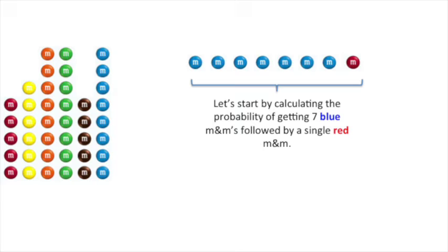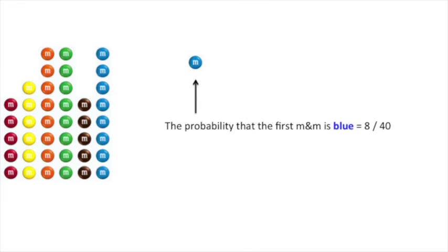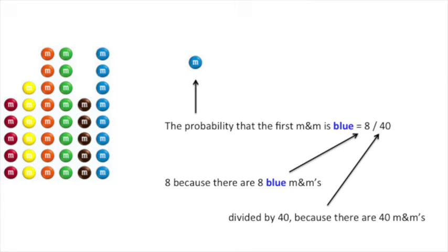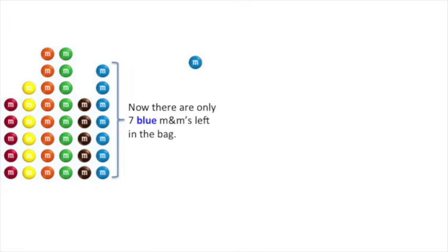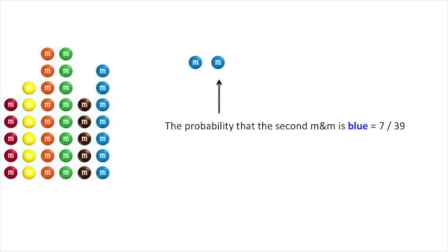Let's start by calculating the probability of getting seven blue M&Ms followed by a single red M&M. The probability that the first M&M is blue equals 8 divided by 40. 8 because there are 8 blue M&Ms divided by 40 because there are 40 M&Ms total. Now that I've got one M&M in my hand there are only seven blue M&Ms left in the bag. The probability that the second M&M is blue equals 7 divided by 39.